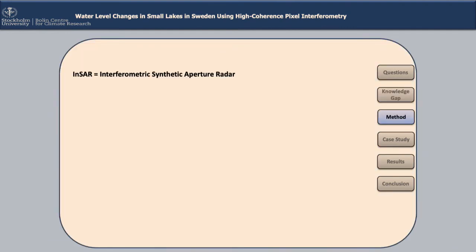InSAR is an acronym for Interferometric Synthetic Aperture Radar. The microwave signal is transmitted by the satellite and hits the surface of the water, but unfortunately it goes in another direction because the water surface is so smooth — it acts like a mirror. However, if there is something like high marshes or a tree trunk, the signal can be bounced back to the satellite. This is what we use here in Sweden, which has the perfect vegetation cover for this purpose.